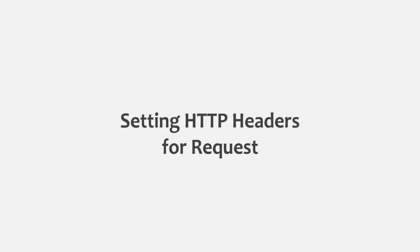So far in this section we have learned how to send different types of HTTP requests to the server. Now while sending an HTTP request we can also send some additional data with the request by setting request headers. In this lecture let's learn the different ways in which we can set request headers when working with the HTTP client object.